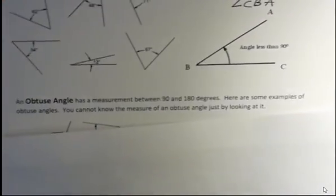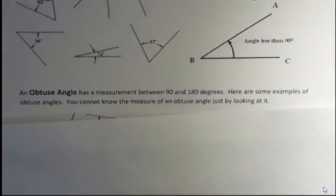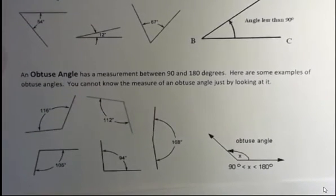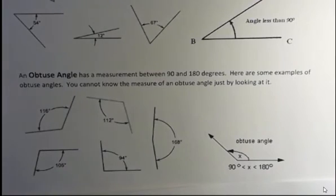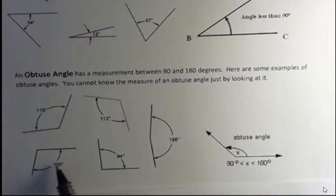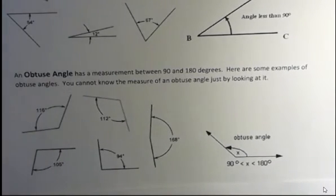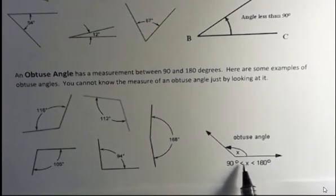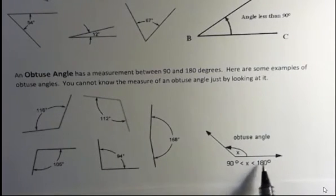And then we have obtuse angles. Obtuse angles have a measurement between 90 and 180 degrees. Here are some examples of obtuse angles. Again, you cannot know the measure of an obtuse angle just by looking at it. You would have to measure it using a protractor or be given that measurement by somebody. These are all angles that are greater than 90, but less than 180. And so an obtuse angle in general is that some x where it's bigger than 90 and less than 180. That's what that means. That notation x is greater than 90, x is less than 180.